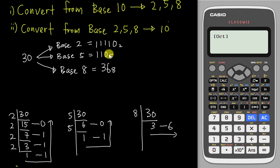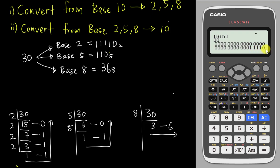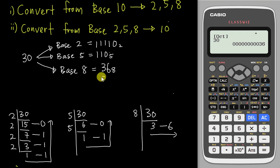To check my answers using the calculator, I go to DEC and type my base 10 number — in this case 30. Then I press BIN and can see the base 2 answer: 11110. Be careful about leading zeros — sometimes a 1 might be hidden. Then I press OCT and can see 36. This is how to convert from base 10 to base 2 and base 8 using the calculator.